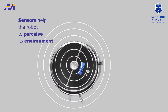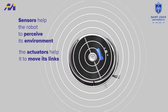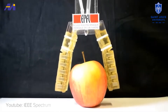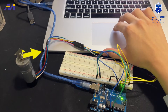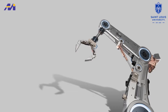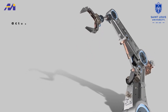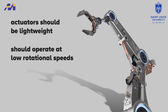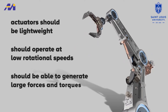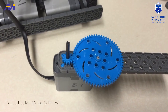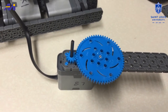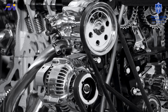When the sensors help the robot to perceive its environment, the actuator helps it to move its limbs. Robot actuators can be electrically driven, or driven by pneumatic or hydraulic cylinders, but electrically driven actuators like AC/DC motors, stepper motors, and shape memory alloys are more common. For the robot to operate optimally, these actuators should be lightweight, operate at low speeds (for example, in the range of hundreds of RPM), and generate large forces and torques. But most available motors operate at low torque and up to thousands of RPMs. Therefore, speed reduction and torque amplification using gears or cable drives are needed.